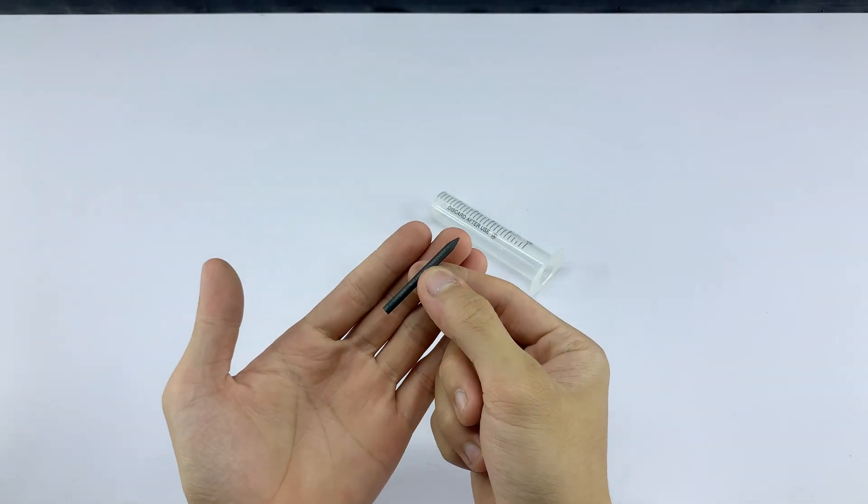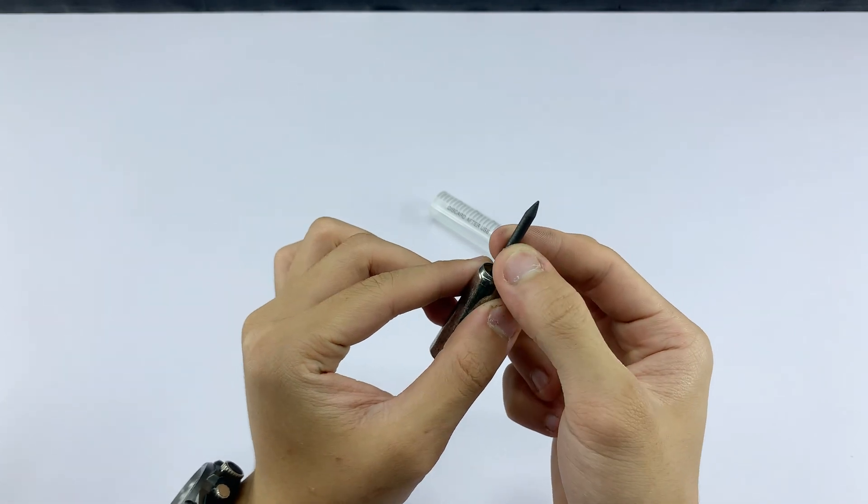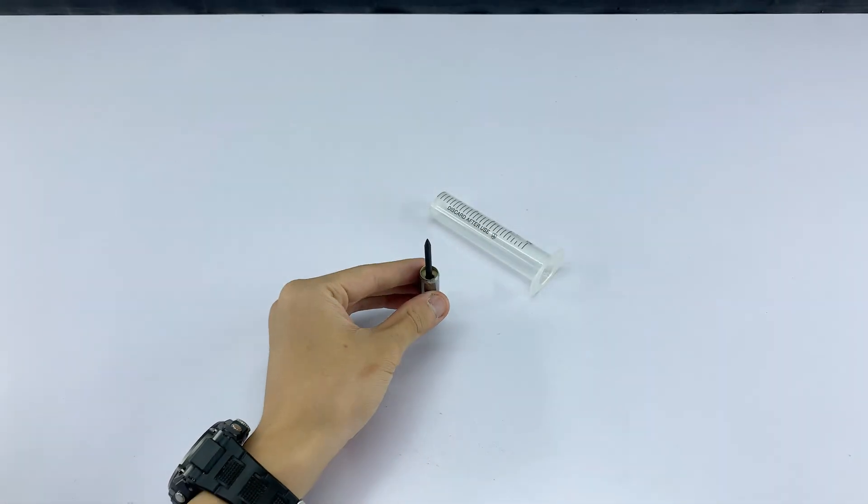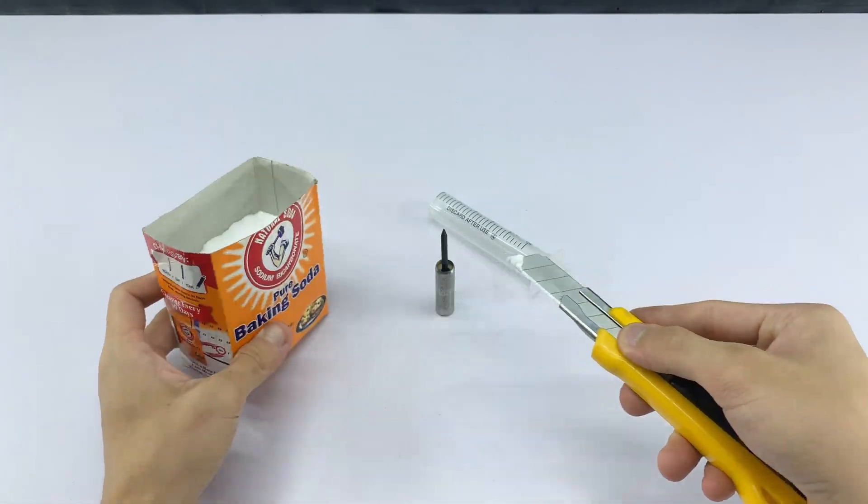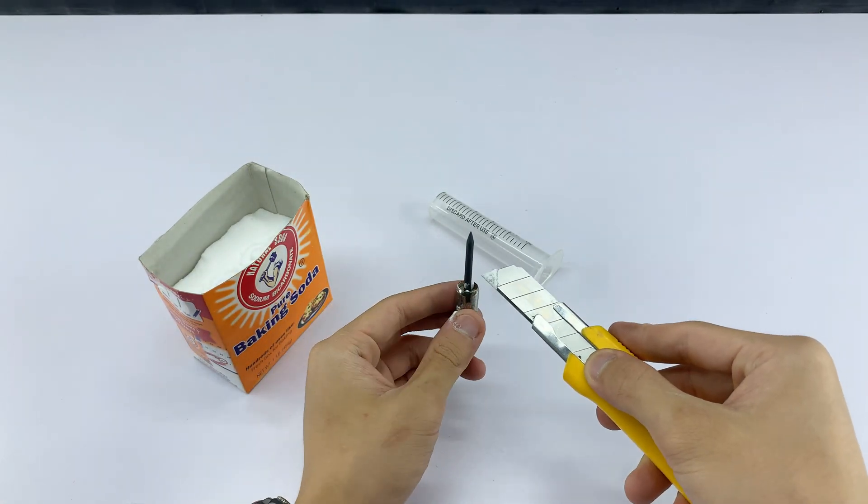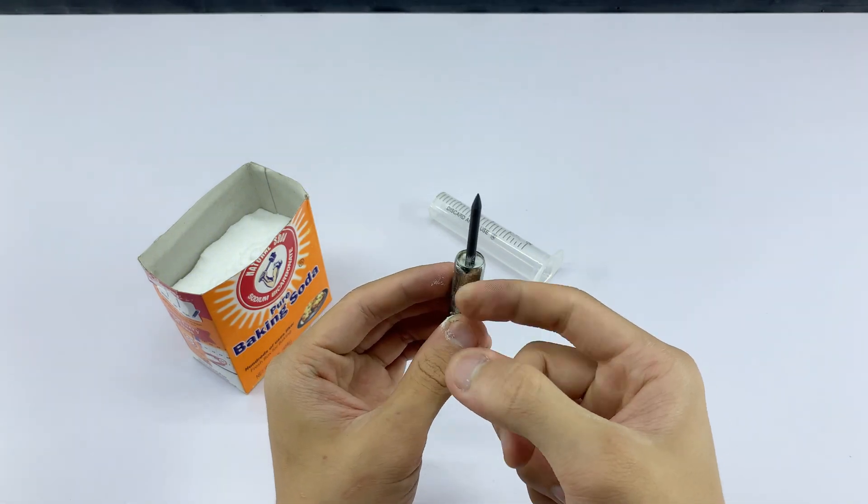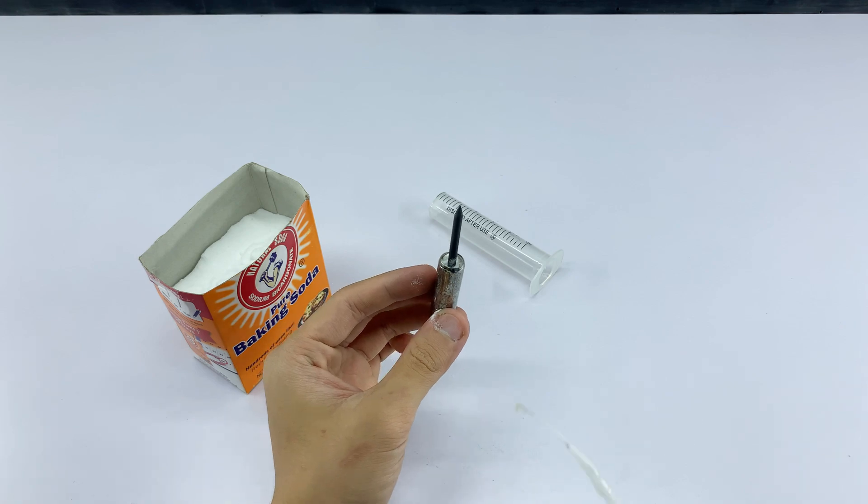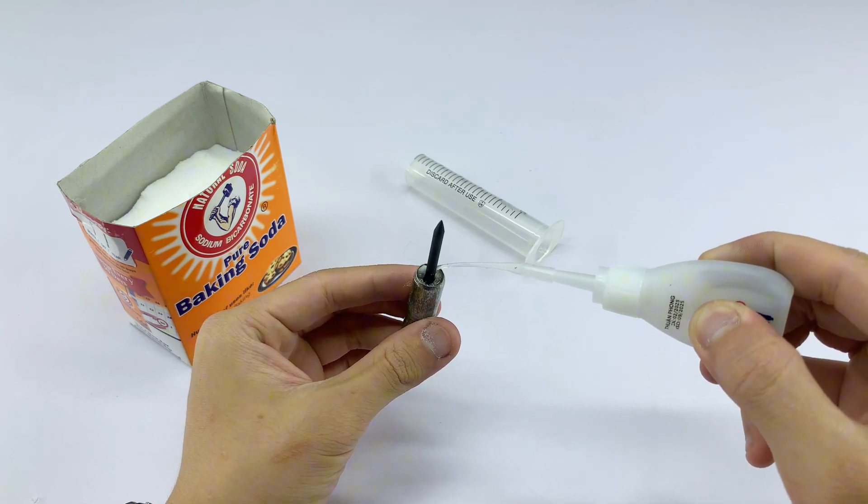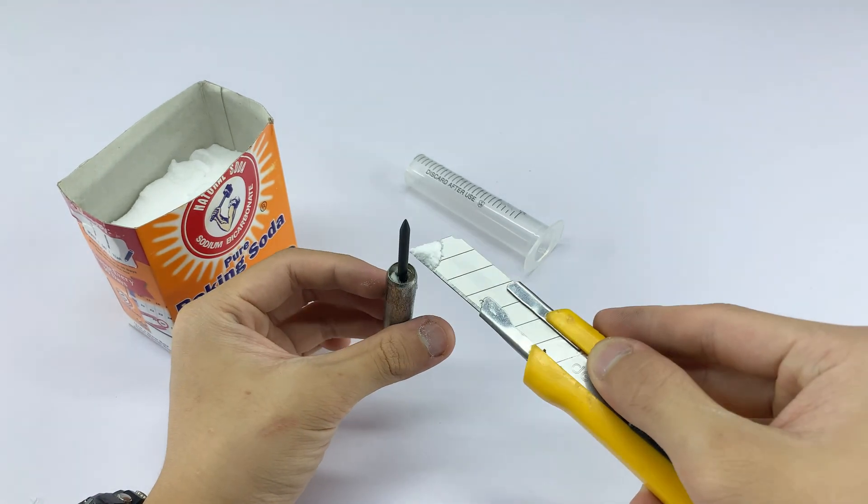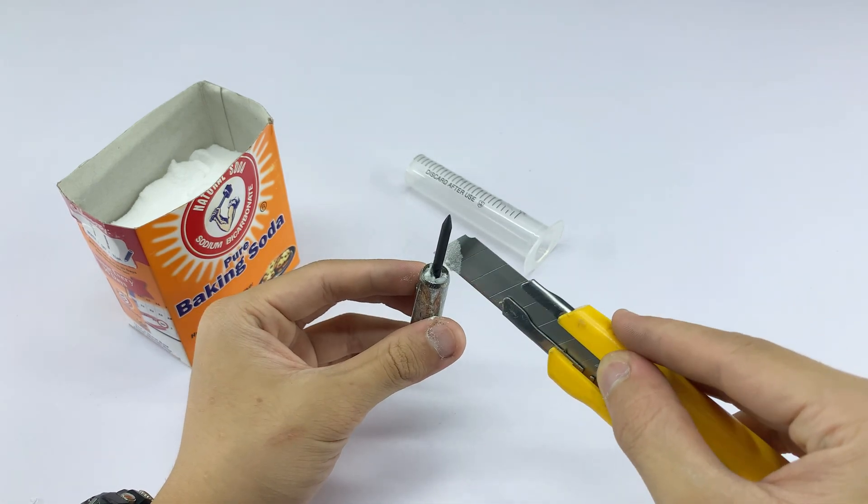To secure the carbon rod in place and strengthen the bond, I'm taking some baking soda and applying super glue to the sharpened carbon rod tip. Then, I'm dipping it into the baking soda, repeating this process several times to create a hard, durable tip.